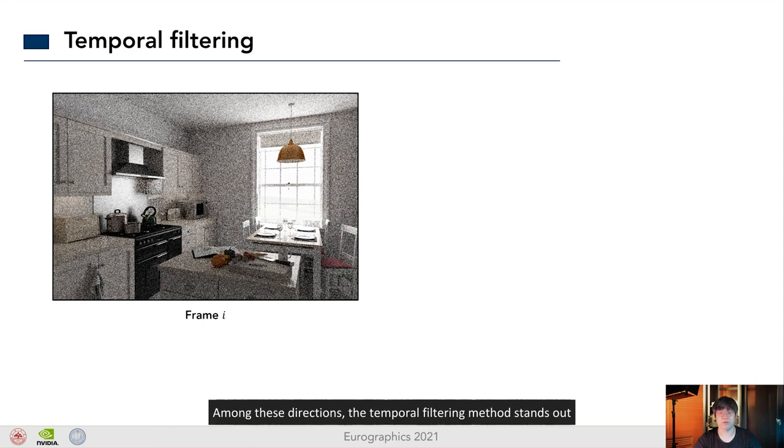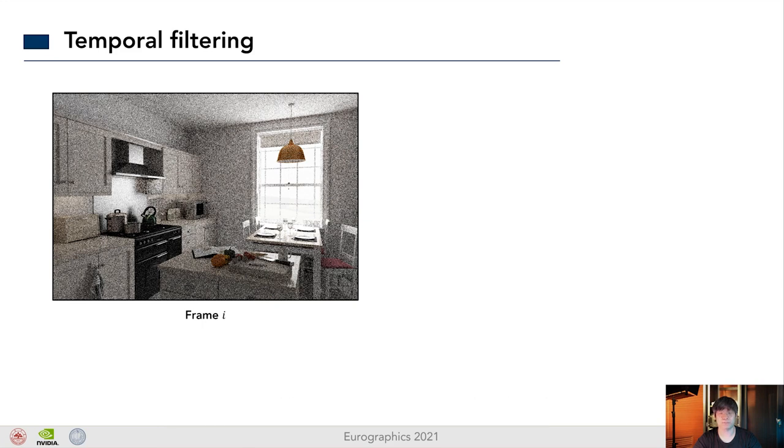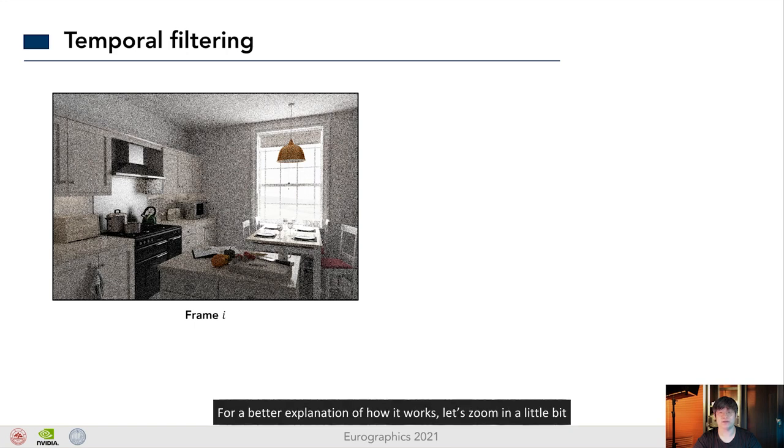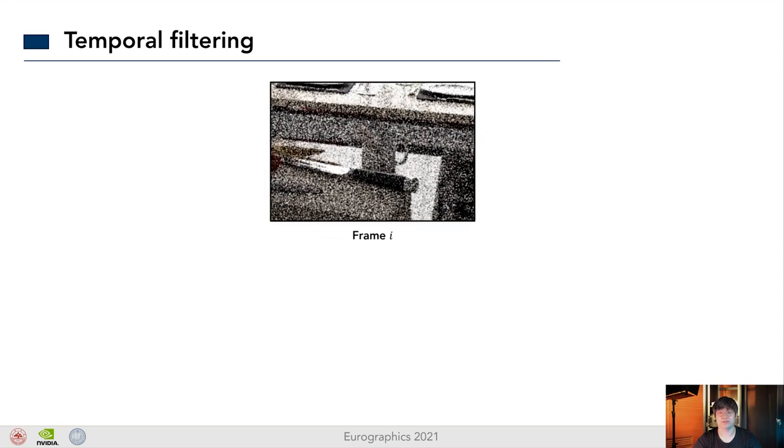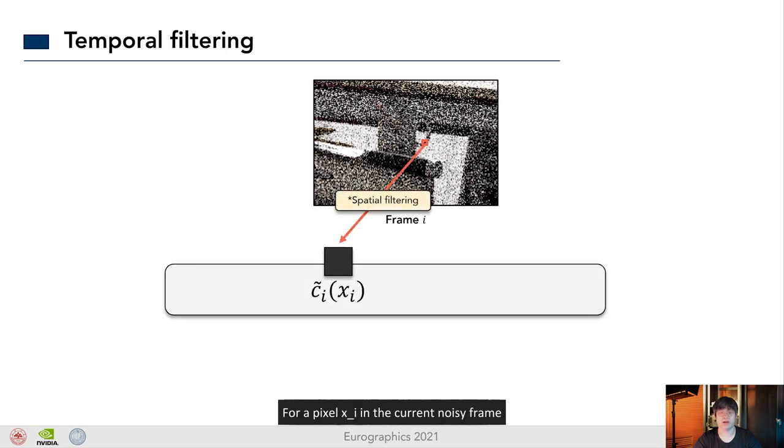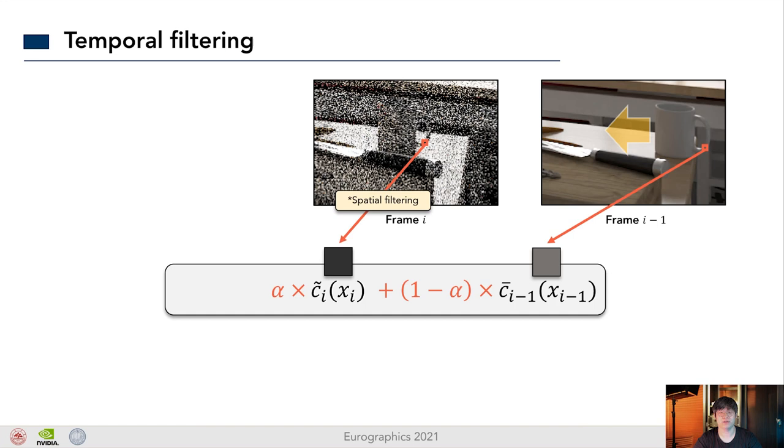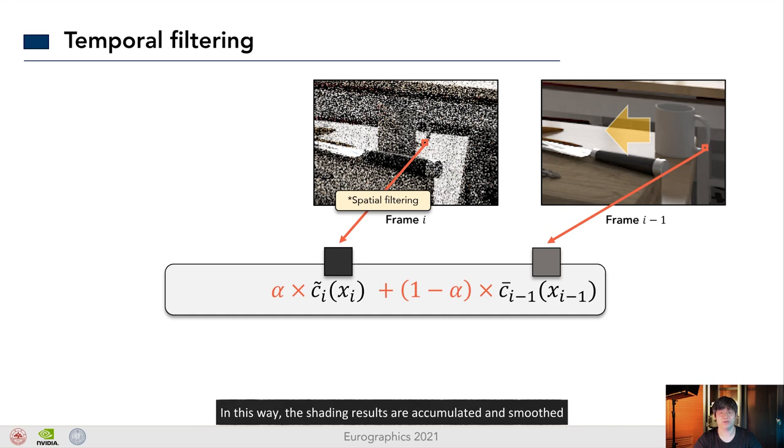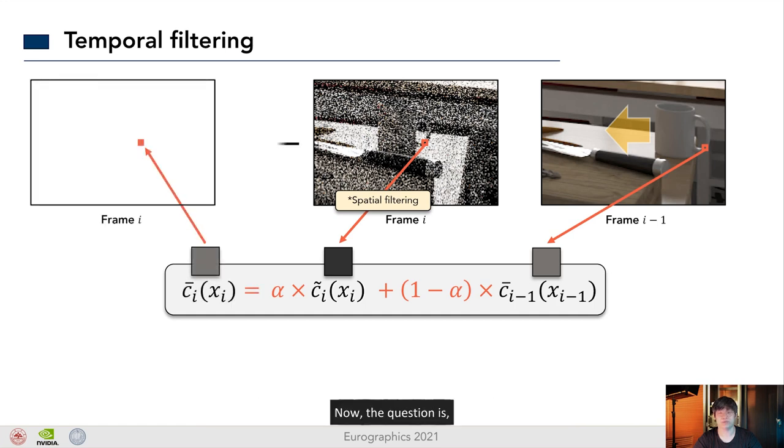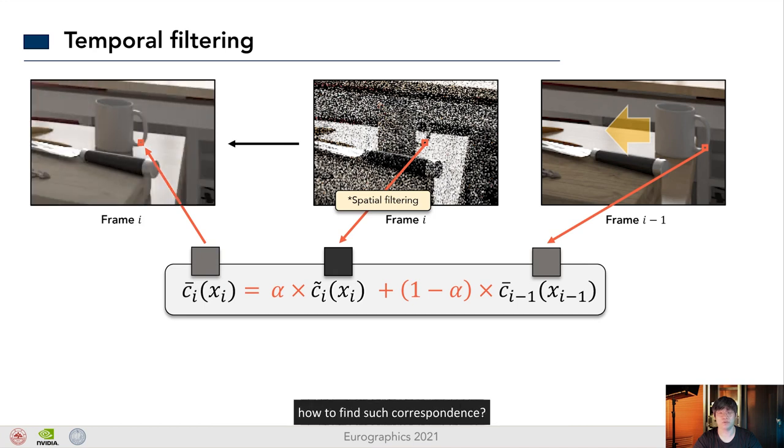Among these directions, the temporal filtering method stands out. For a better explanation of how it works, let's zoom in a little bit. For a pixel x sub i in the current noisy frame, it finds the corresponding pixel x sub i minus one in the previous frame. Then, it linearly blends these two pixels, using a blending factor alpha. The alpha is a factor between 0 and 1 that determines how much temporal information it trusts and uses. In this way, the shading results are accumulated and smooth.